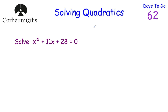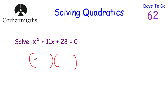We've looked at factorising quadratics; now let's look at how to use that to solve quadratic equations. Here we've got: solve x squared plus 11x plus 28 equals 0. To solve a quadratic equation like this, first make sure it equals 0 — which it already does. Then factorise the left-hand side. Pause the video now and try to factorise it. Factorising: we need two numbers that multiply to 28 and add to 11 — that's 4 and 7. So we get x plus 4 times x plus 7 equals 0.